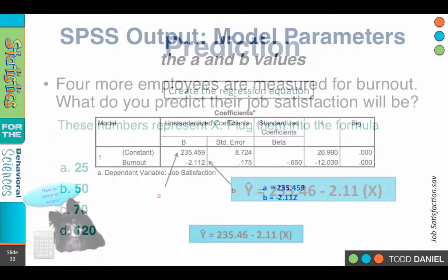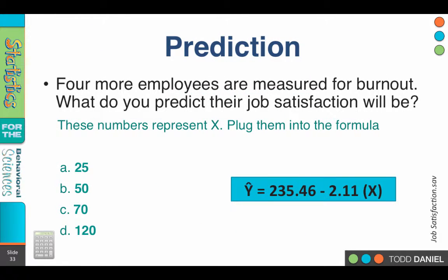Let's take that formula and use it for prediction. So we see the formula on the right. I would like for you to predict the value of Y when X equals 25. Plug in 25 times 2.11. Subtract that from 235.46. What value do you get? 182.71.